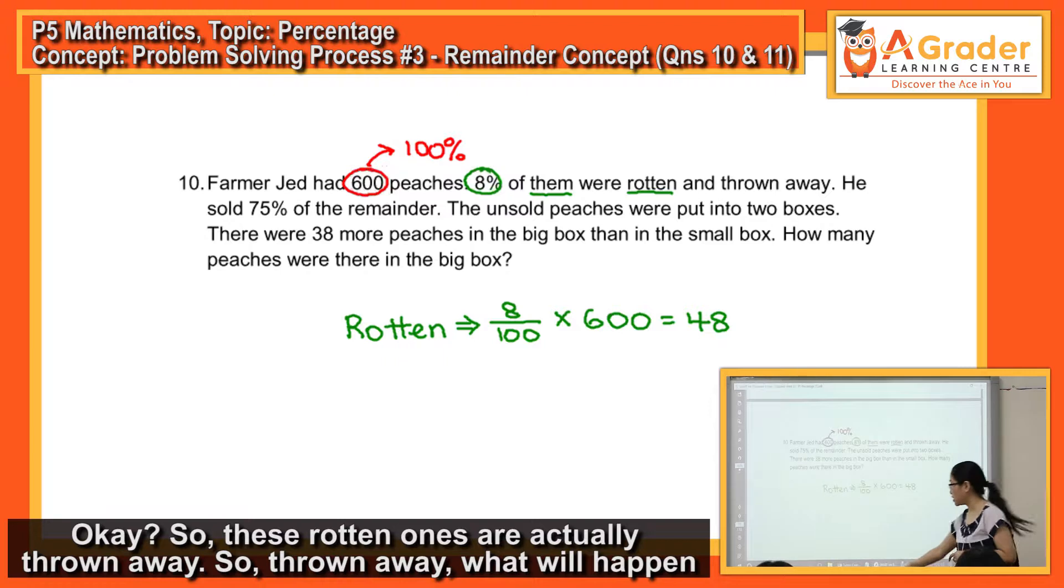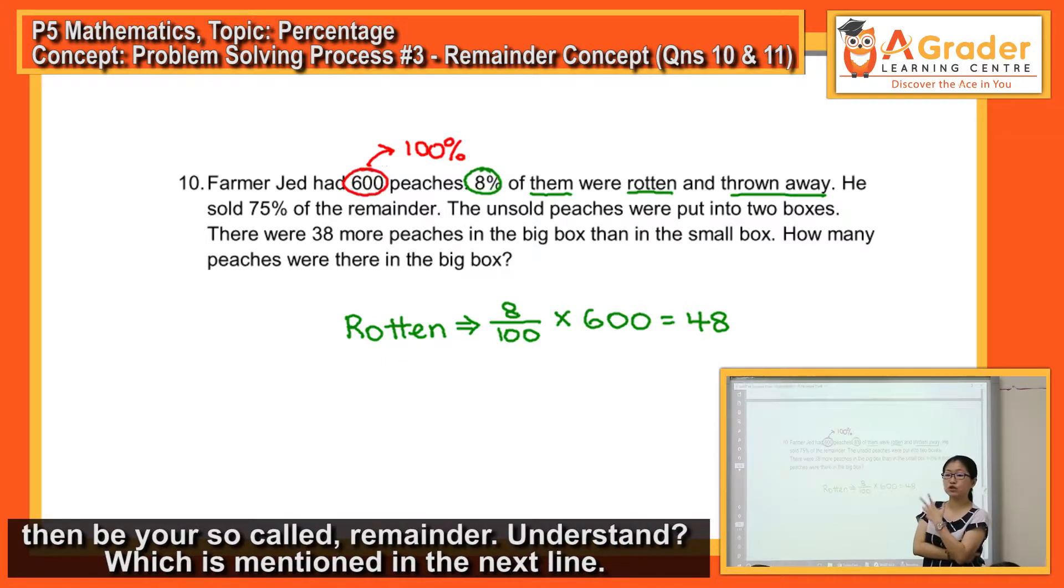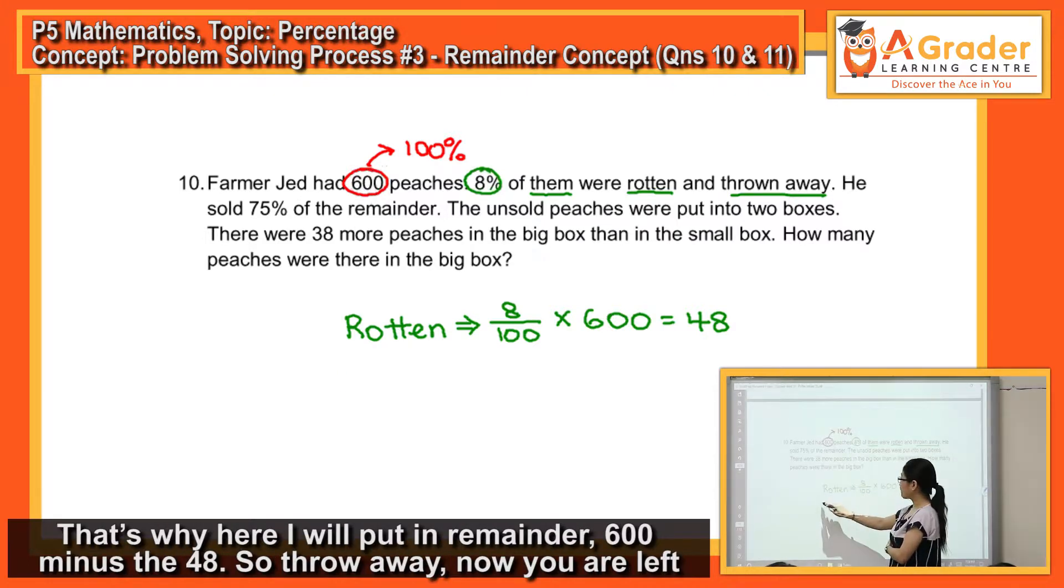So these rotten ones, they were actually thrown away. So thrown away, what will happen to your total? You got to minus it, right? So when you actually subtract it away, this will then be your so-called remainder. That's why here I will put in remainder.